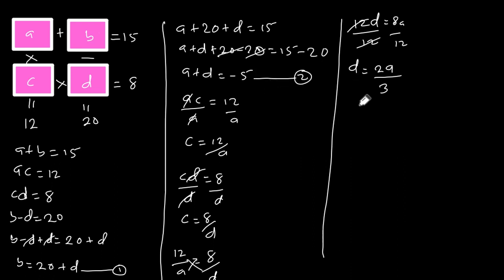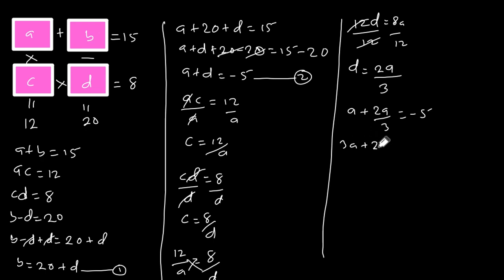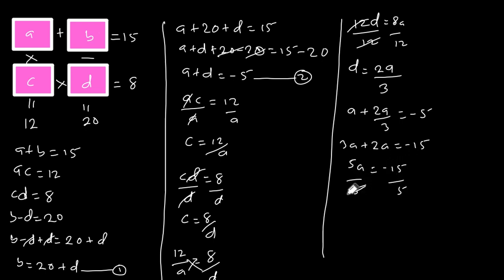We can plug D equals 2A over 3 into equation two. So we have A plus 2A over 3 is equal to negative 5. Multiplying through by 3 gives 3A plus 2A equals negative 15, so 5A equals negative 15. Dividing each side by 5, A is equal to negative 3.